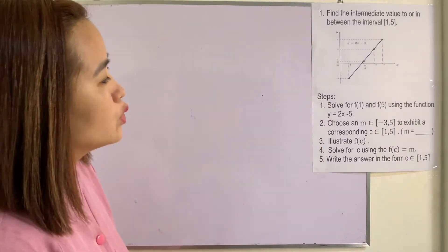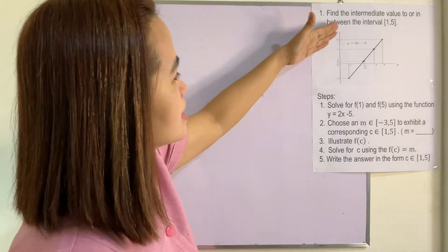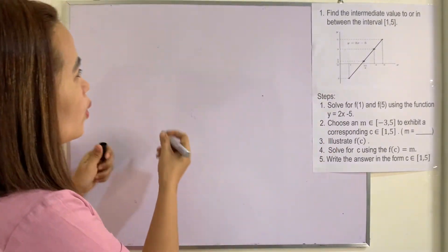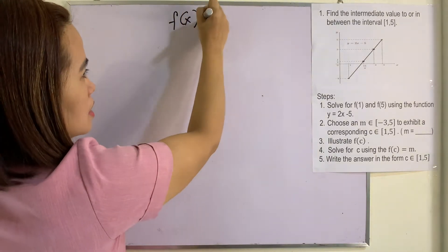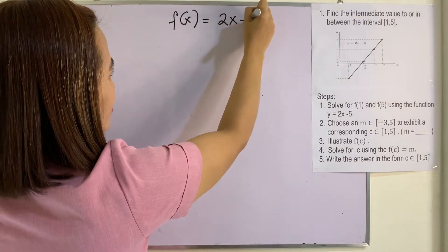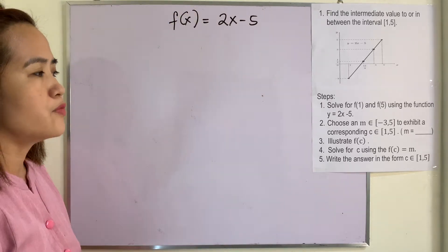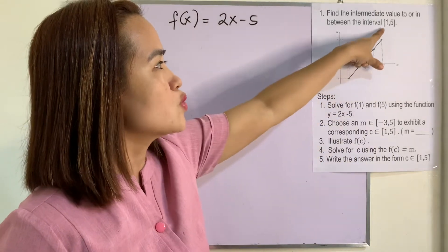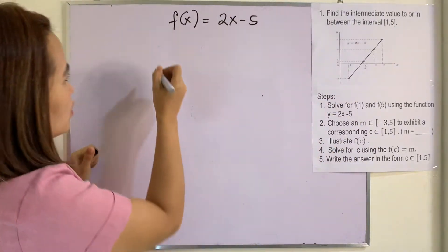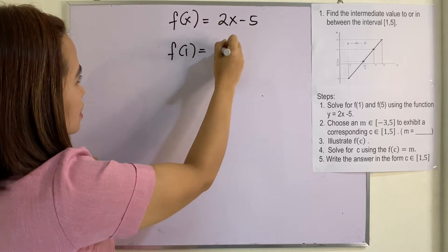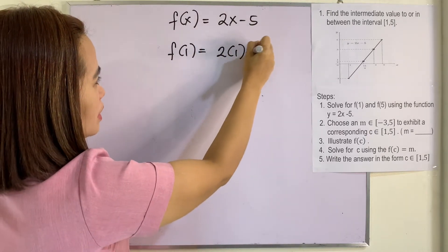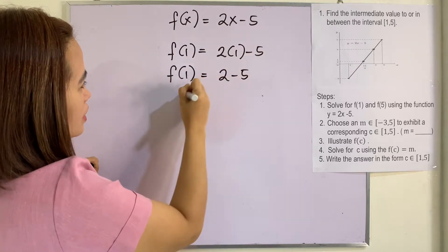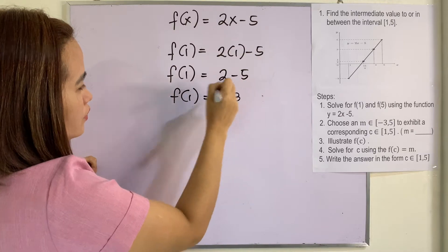Let's take this example. This is the graph of the given function, which is y equals 2x minus 5. Remember that y is the same as f(x). So for f(1) and f(5), this is the interval. We need to get f(1). That will be 2 times 1 minus 5, which is 2 minus 5. Therefore, f(1) is equal to negative 3.